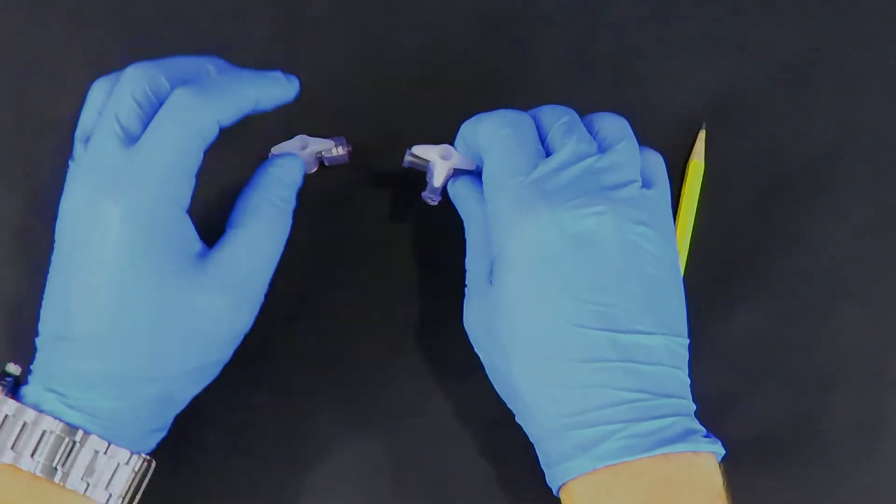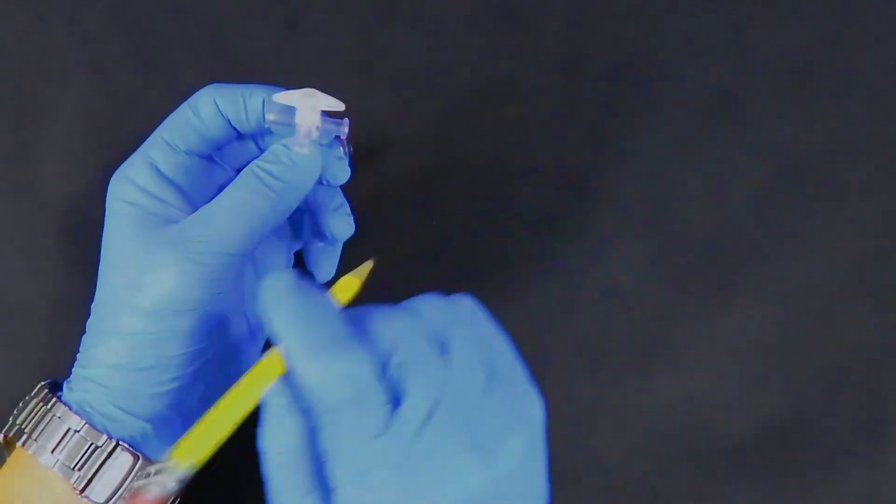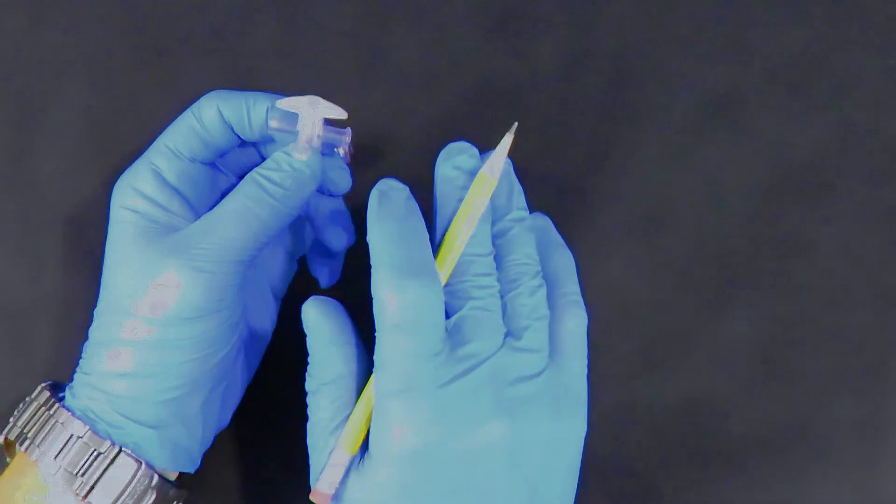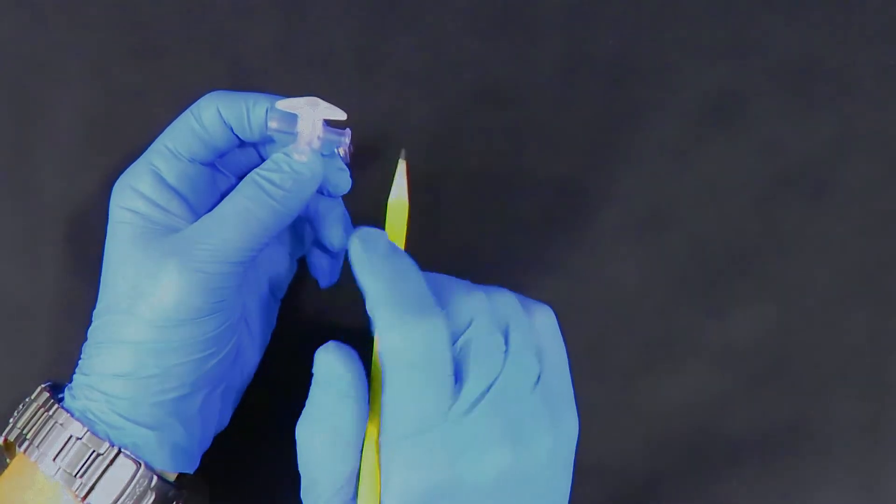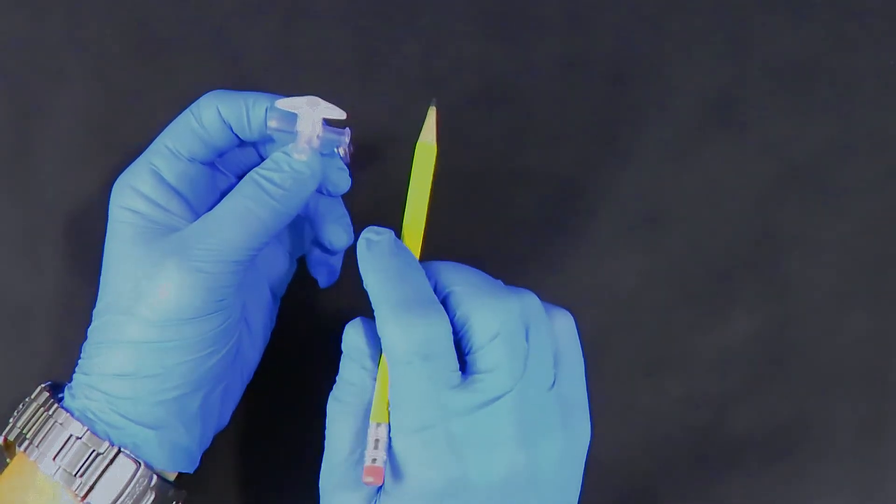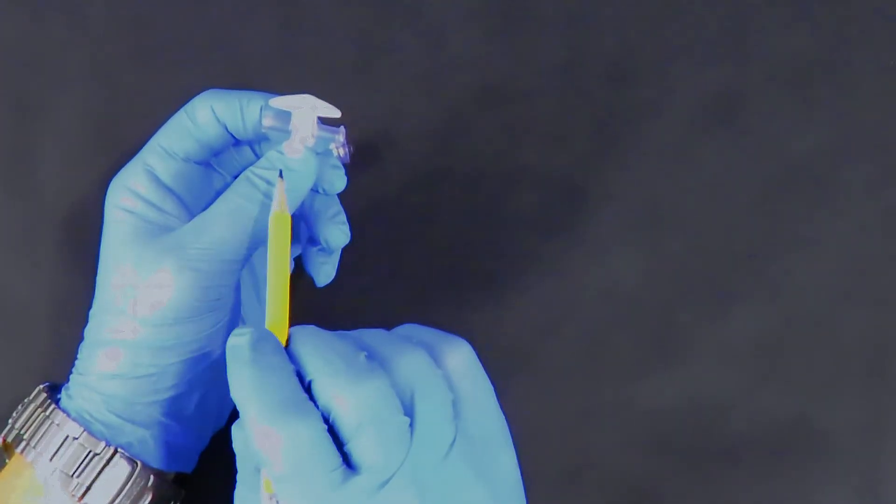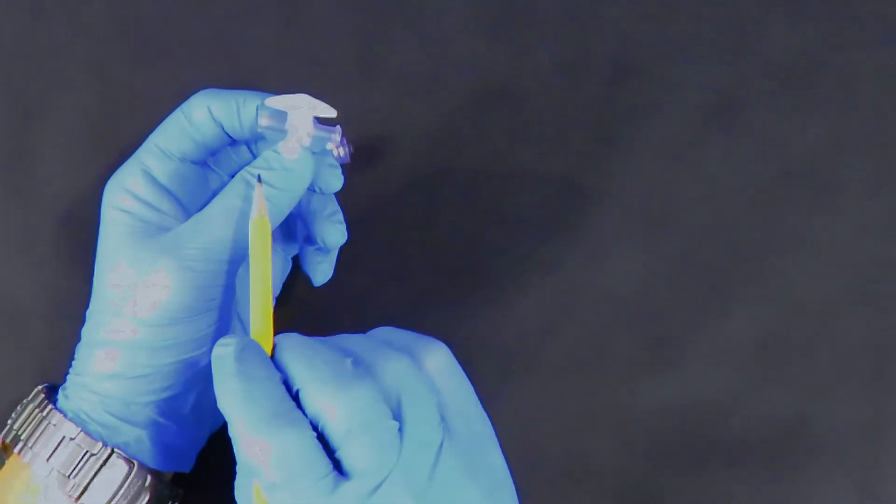A four-way stopcock has three ports, and the four ways it can control the flow of liquid or gas is through each of the ports in sequence or all three ports simultaneously.